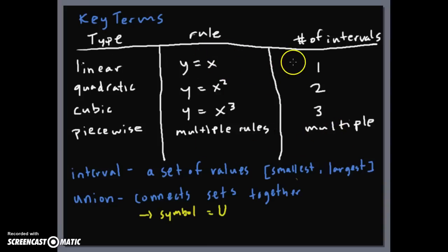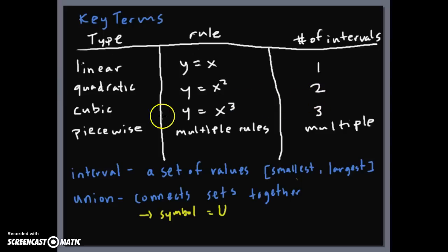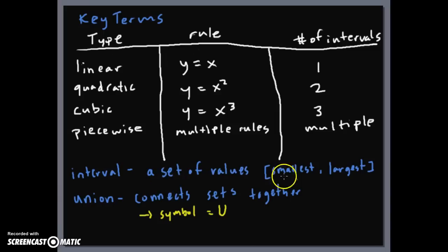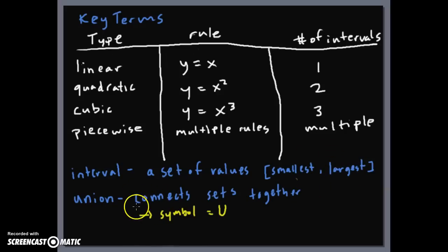Notice the correlation between the degree exponent in the equation and the number of intervals. In the last video we focused on linear graphs with only one interval — either increasing or decreasing. Quadratics will have two intervals, cubics will have three, and piecewise functions will have multiple intervals. An interval is a set of values listed with brackets or parentheses, smallest value first. A union connects multiple sets and is represented by the capital U symbol.